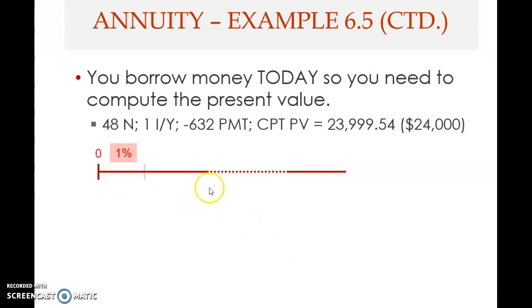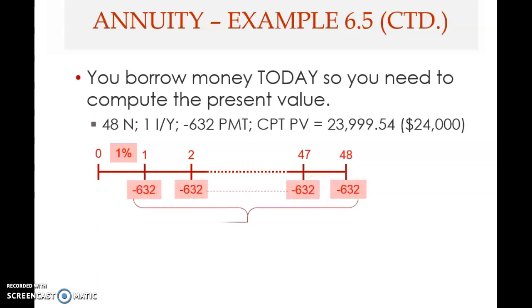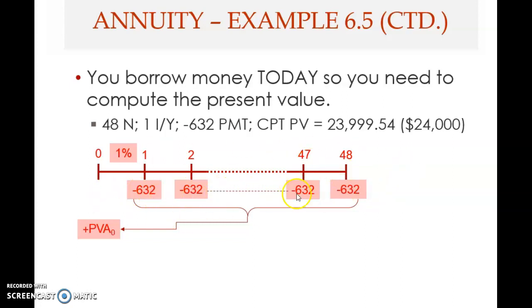The next slide shows a timeline illustrating this problem. There are three known elements: the interest rate of one percent per period (one month), 48 periods, and 48 payments of $632 — all negative because you are making payments. The present value of all these annuity payments gives the loan value — the amount you borrow.